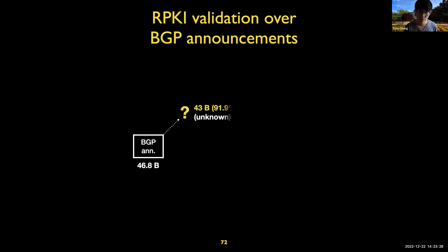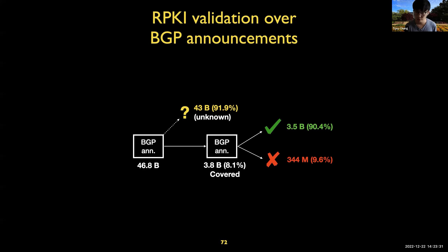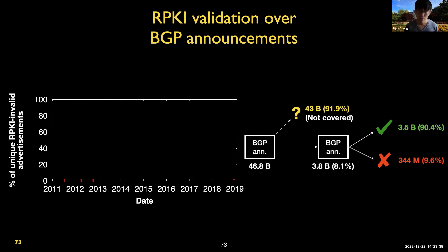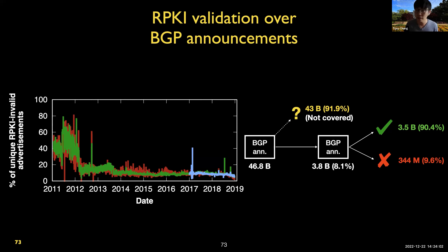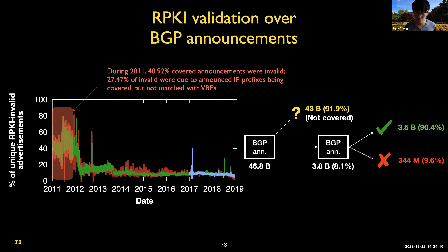We can also validate BGP announcements using RPKI objects. We found that about 10% of those verifiable announcements are actually invalid, which is concerning. The good news is the invalid BGP announcement percentage is dropping. At the early stage, right after RPKI was introduced, over 40% — actually over 6% of RPKI-covered BGP announcements — were invalid. It was such a mayhem because network operators did not know how to deploy RPKI correctly. But as time went by, the RPKI invalid percentage dropped to nearly 1%.